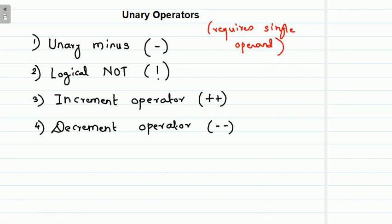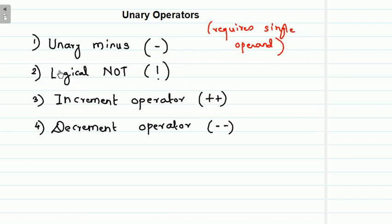There are four unary operators. The first one is unary minus. The second one is logical not — we already studied this in the last lecture on logical operators. The third is the increment operator, specified by two plus signs, and the last one is the decrement operator, specified by two minus signs. Those not familiar with logical not, please watch the video on logical operators.